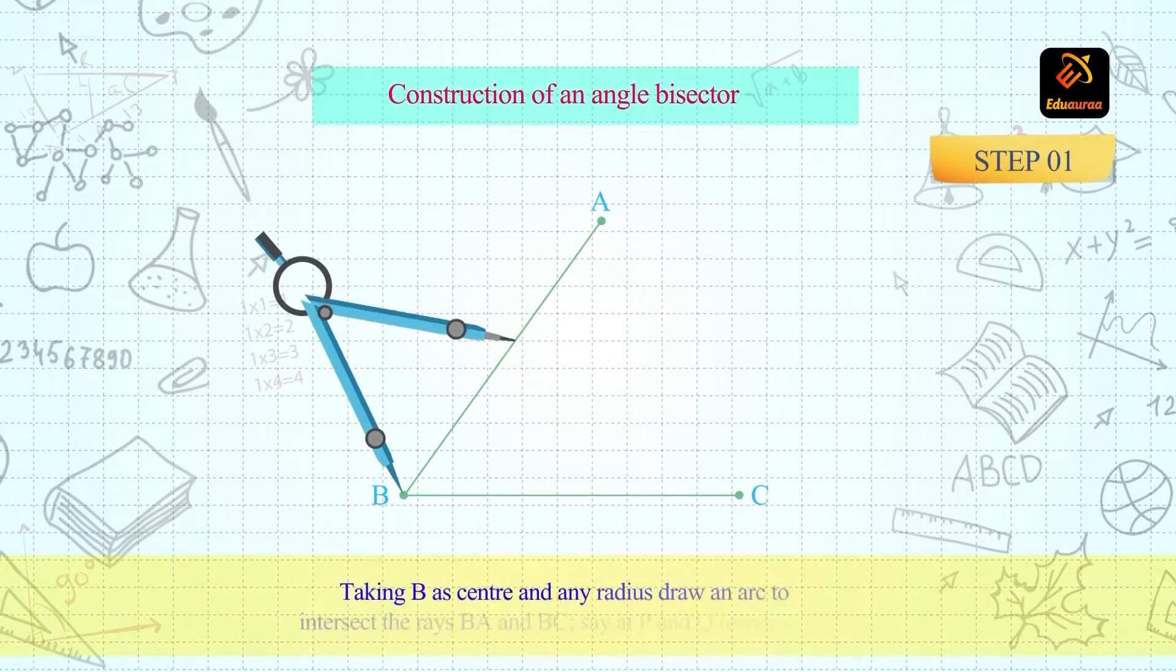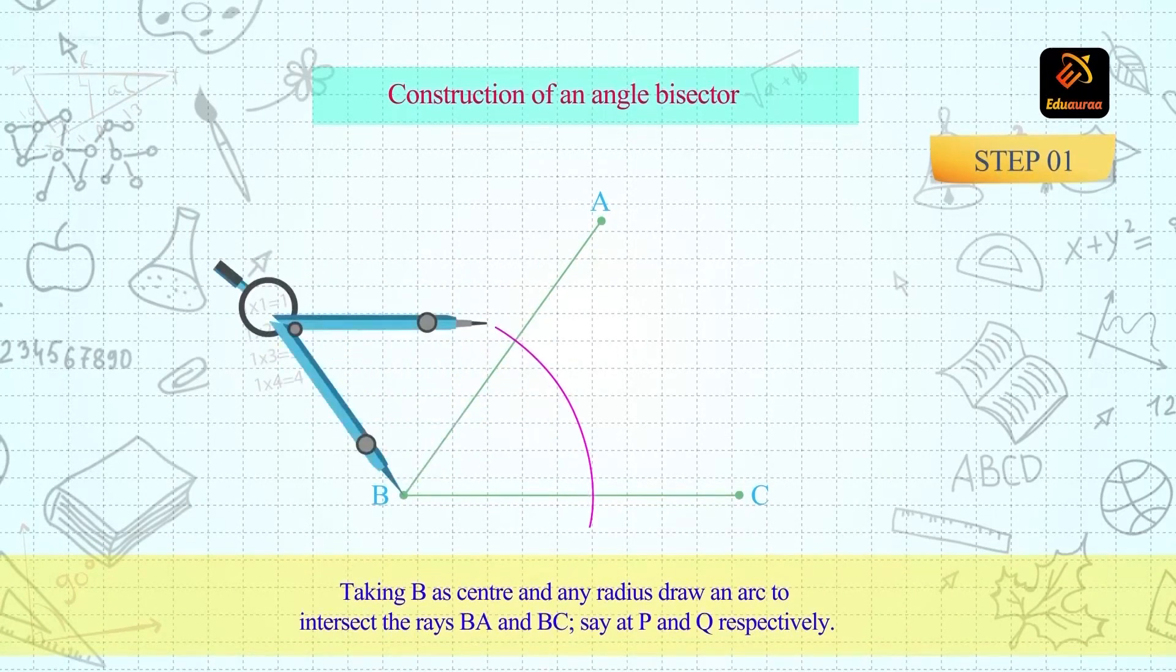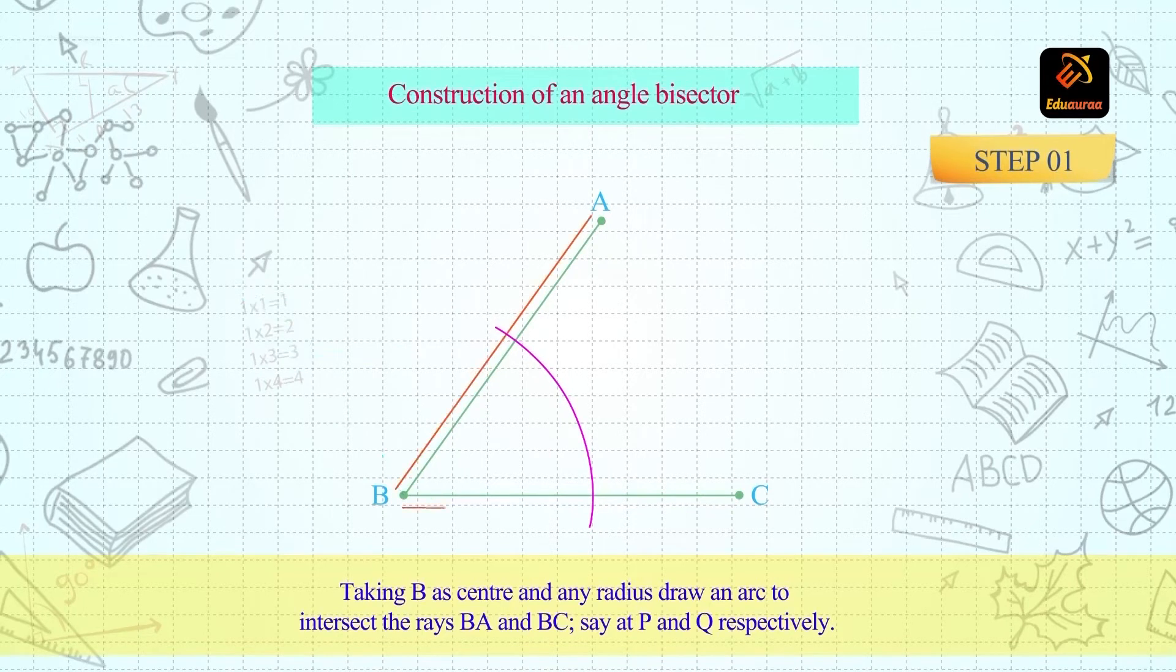Taking B as center and any suitable radius, draw an arc to intersect the rays BA and BC at P and Q respectively.